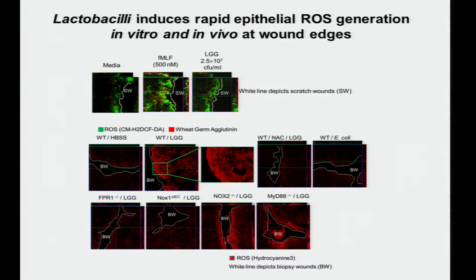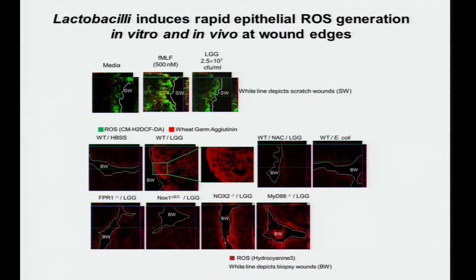These effects are enhanced around the wound edge. In an in vitro scratch wound assay, you take a cultured monolayer, scrape it, use the dye, and stimulate with bacteria or pure formyl peptide—showing activation of ROS especially at the edge. Using a veterinary endoscope inserted into the distal colon with a biopsy to inflict wounds, we show strong upregulation of ROS enhanced along the wound edge. Non-ROS-stimulating bacteria such as E. coli do not do this. The ROS response is lost in both NOX-1 null and FPR null animals but is preserved in NOX-2 null animals—indicating this is not coming from phagocytes—and in MyD88 null animals, indicating this is not primarily going through the TLR pathway.